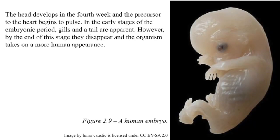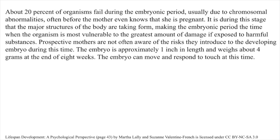The head develops in the fourth week, and the precursor to the heart begins to pulse. In the early stages of the embryonic period, gills and a tail are apparent. However, by the end of this stage, they disappear, and the organism takes on a more human appearance. About 20% of organisms fail during the embryonic period, usually due to chromosomal abnormalities, often before the mother even knows she is pregnant. It is during this stage that the major structures of the body are taking form, making the embryonic period the time when the organism is most vulnerable to the greatest amount of damage if exposed to harmful substances. The embryo is approximately one inch in length and weighs about four grams at the end of eight weeks, and can move and respond to touch at this time.